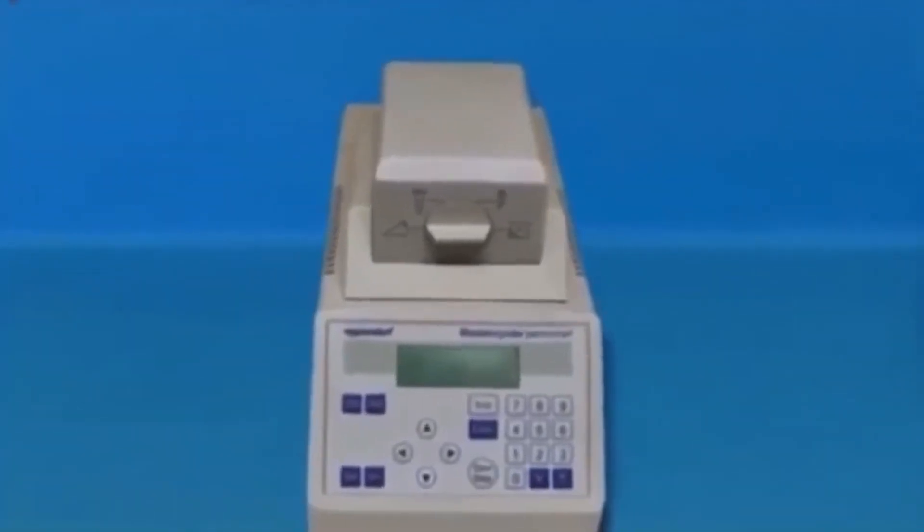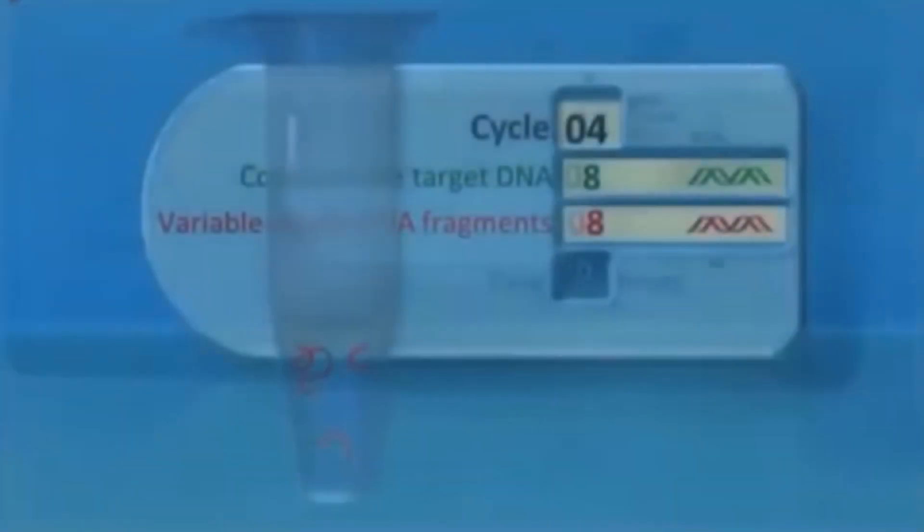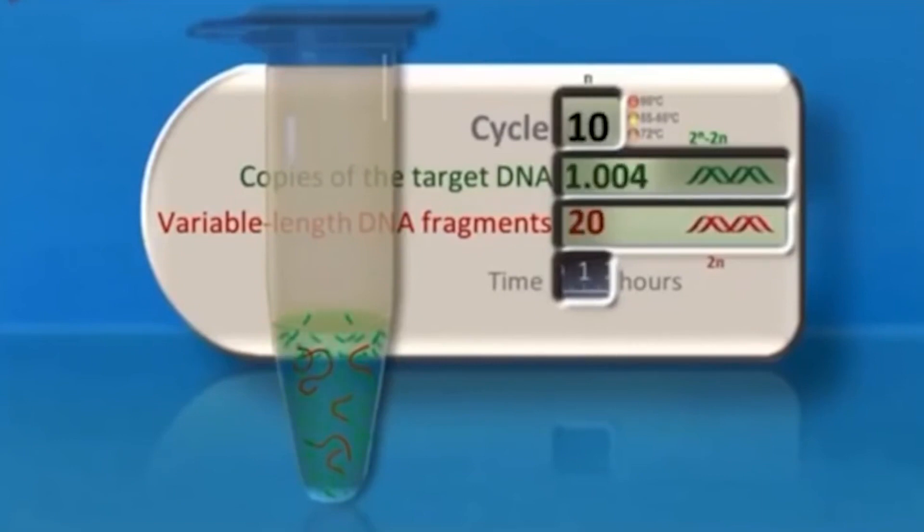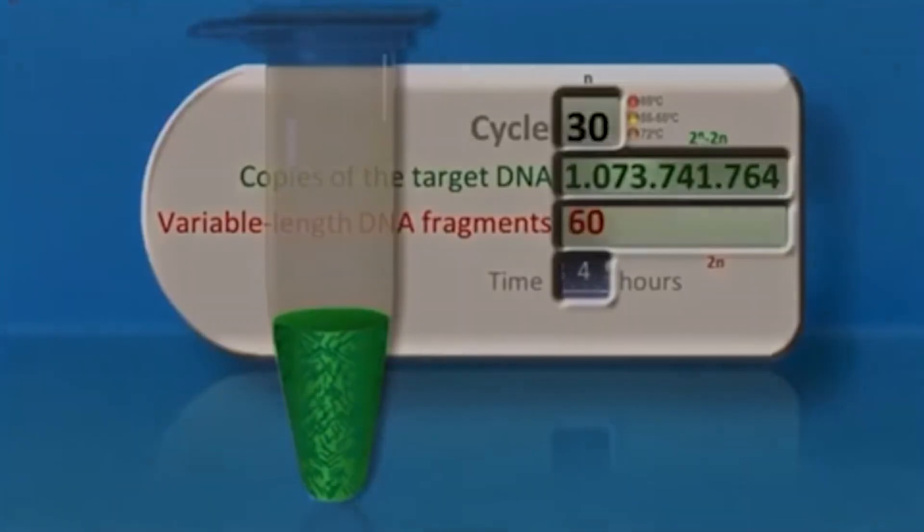So do you know how the tests work? It's not a binary test, like a pregnancy test. It's called a PCR test, and it involves amplifying genetic material by doubling it in dozens of cycles, until you have billions or trillions of the original molecules, and then using those results to determine if you have enough of the identified RNA fragment to be considered positive.